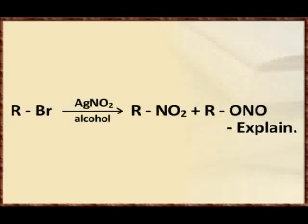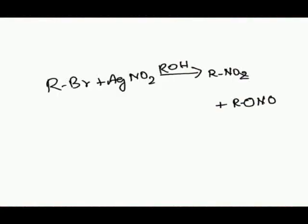So here the equation you can see it on the screen: RBr when it reacts with AgNO2 in the presence of alcohol, it forms nitro alkanes. You can see the two different products there, right? RNO2 and RONO.